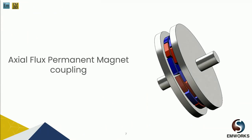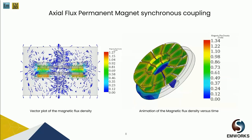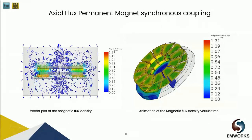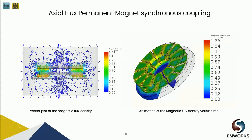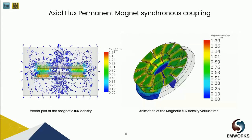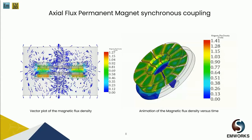Our first example is an axial flux permanent magnet coupling machine made of two sets of permanent magnets — one rotor connected to a motor, the second to a load. This axial flux permanent magnet synchronous coupling is solved using our 3D simulation software coupled to motion and with parametric sweep options, since this model is inherently 3D and 2D approximations would be less accurate.